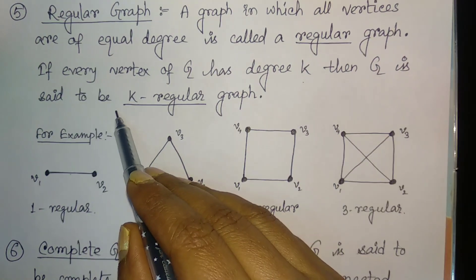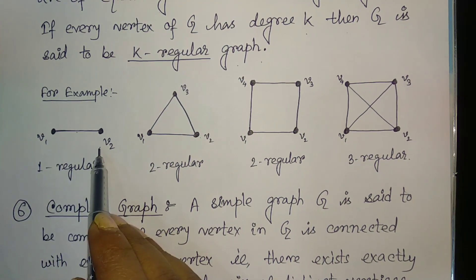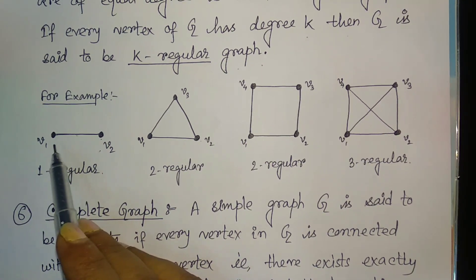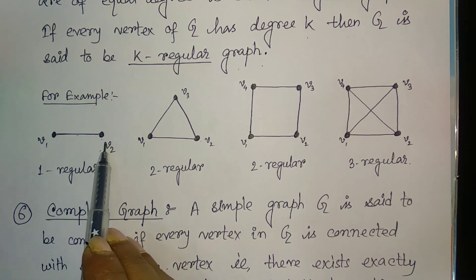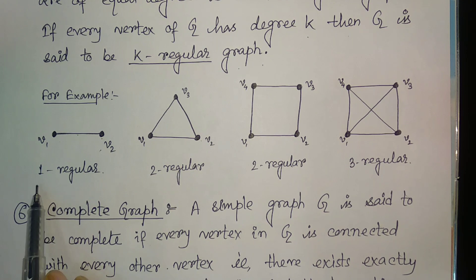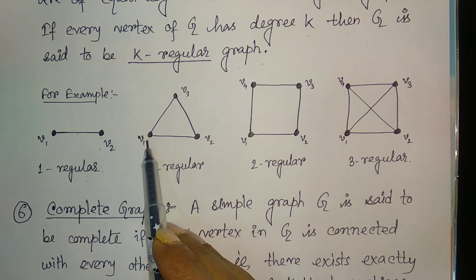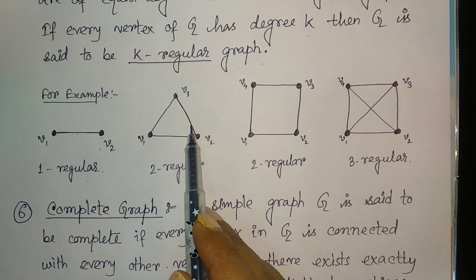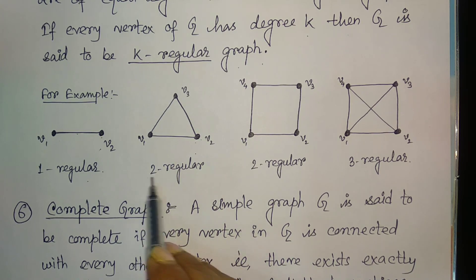For example, if two vertices v1 and v2 are connected by an edge — since these are simple graphs, more than one edge is not possible — the degree of v1 is 1 and degree of v2 is 1, so this is a one-regular graph. With three vertices connected in a cycle, v1, v2, and v3 each have degree 2, so this is a two-regular graph.